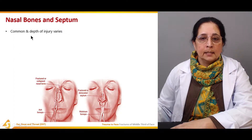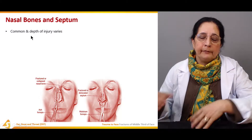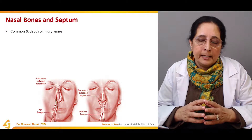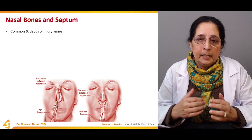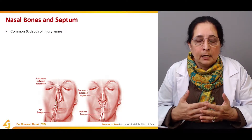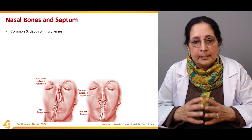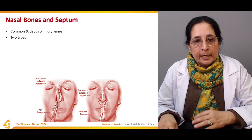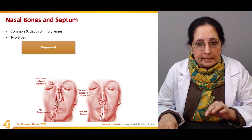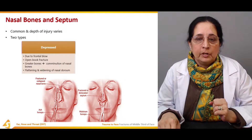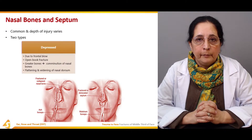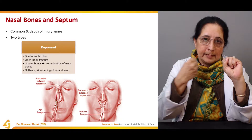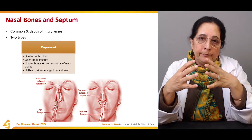The depth of the injury varies depending on how severe the injury is. There are two types: the depressed fracture, which is due to a frontal blow — a blow that comes from the front — and the angulated fracture, which is due to a lateral blow from the side.